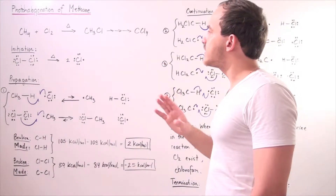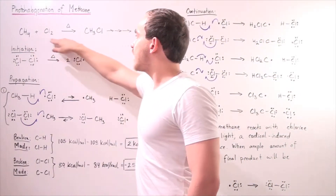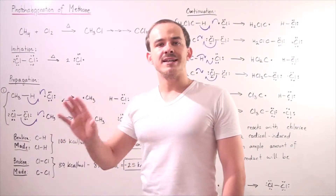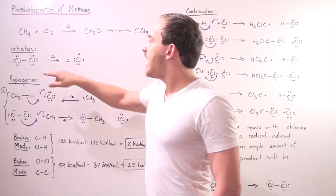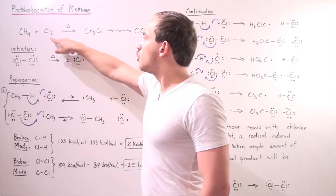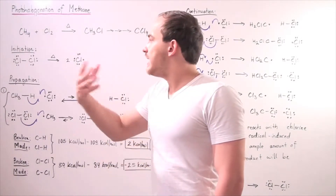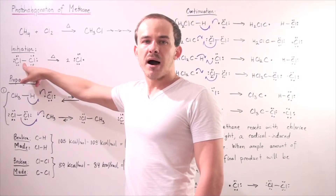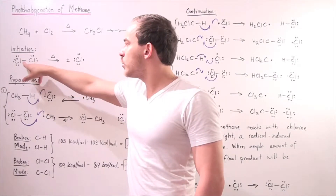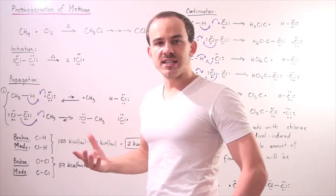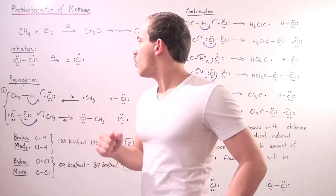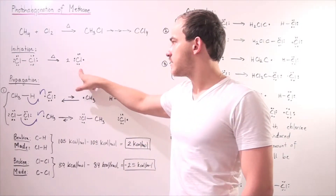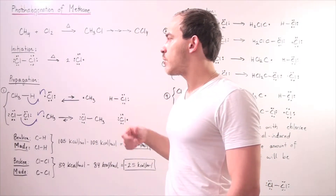Let's examine the steps of this reaction. The first step, known as the initiation step, involves our chlorine molecule. We input energy and break this sigma bond, so the two electrons dissociate and separate, forming two chain-carrying radicals.